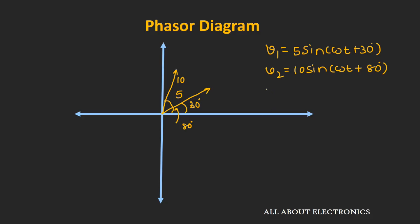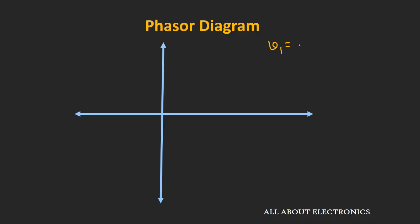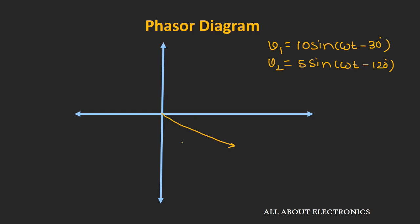Let's see one more example based on Phasor diagram representation. We have a voltage V1 = 10sin(ωt − 30°) and a second signal V2 = 5sin(ωt − 120°), and we want to represent those signals on the Phasor diagram. For V1, we draw a vector with amplitude 10 making an angle of −30 degrees with the horizontal axis. For V2, we draw a vector with amplitude 5 making an angle of −120 degrees with the horizontal axis. This gives the respective representations of V2 and V1.